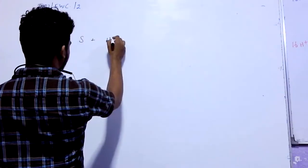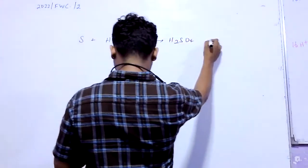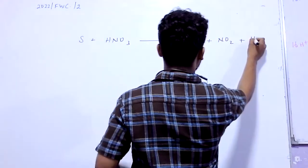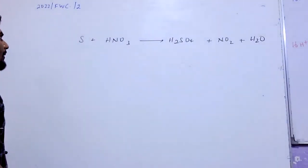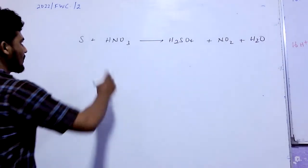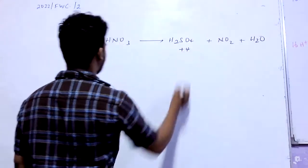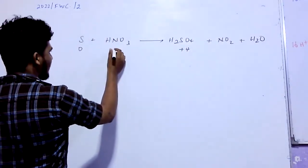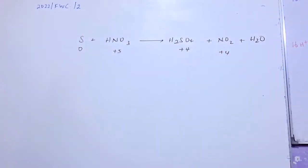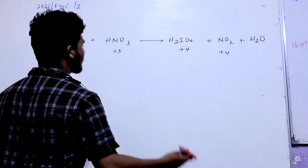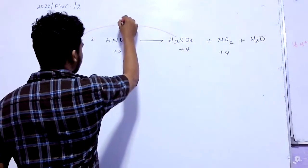Now, sulfur is HNO3, and sulfur is HSO4, and NO2 is H2O. Now, I have to add sulfur — the oxidation state of sulfur is plus 4. Nitrogen is plus 5. This is plus 4.